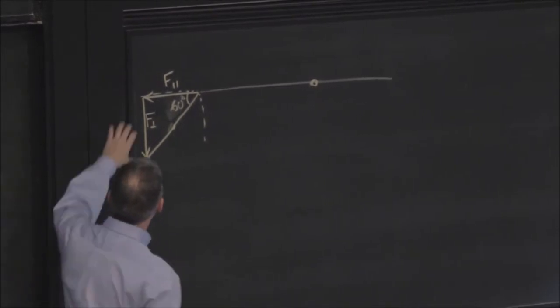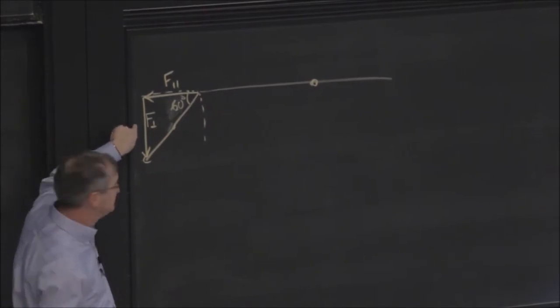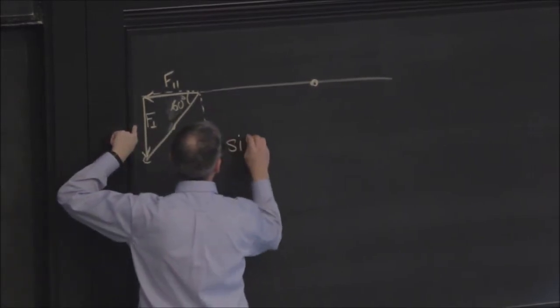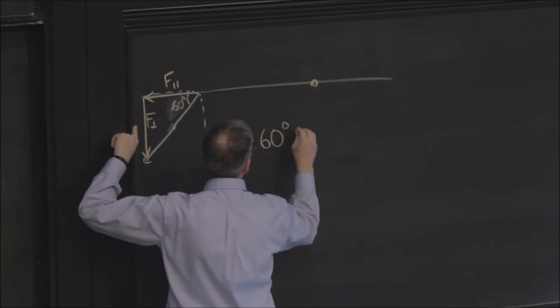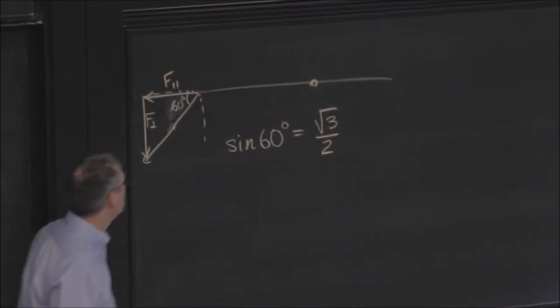And the component that is perpendicular does. And the argument was that the sine of 60 degrees is root 3 over 2.